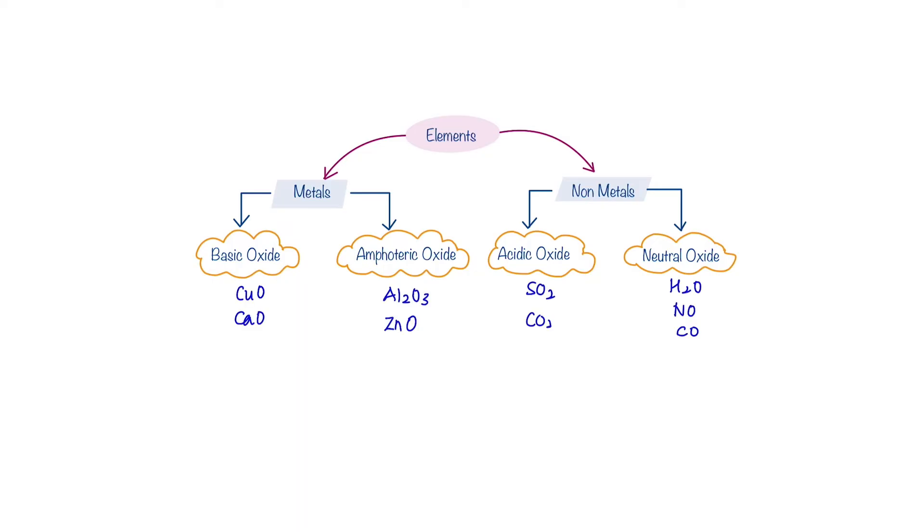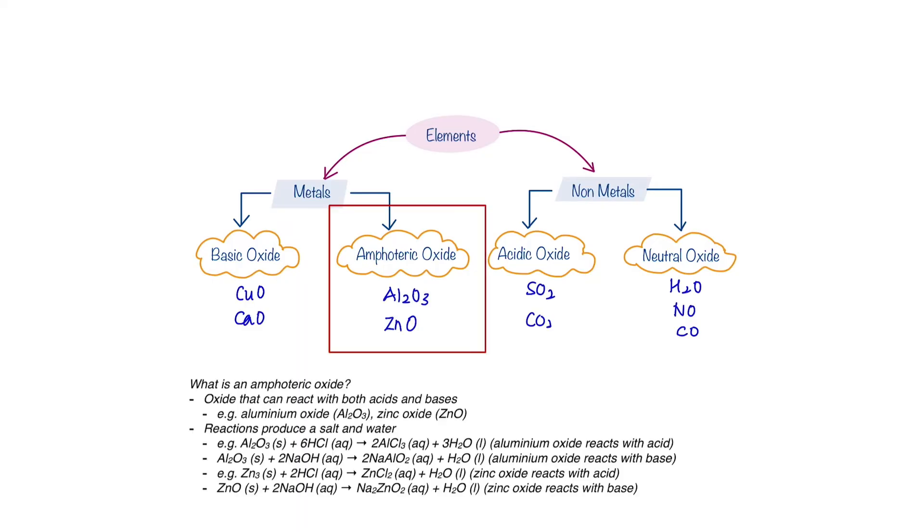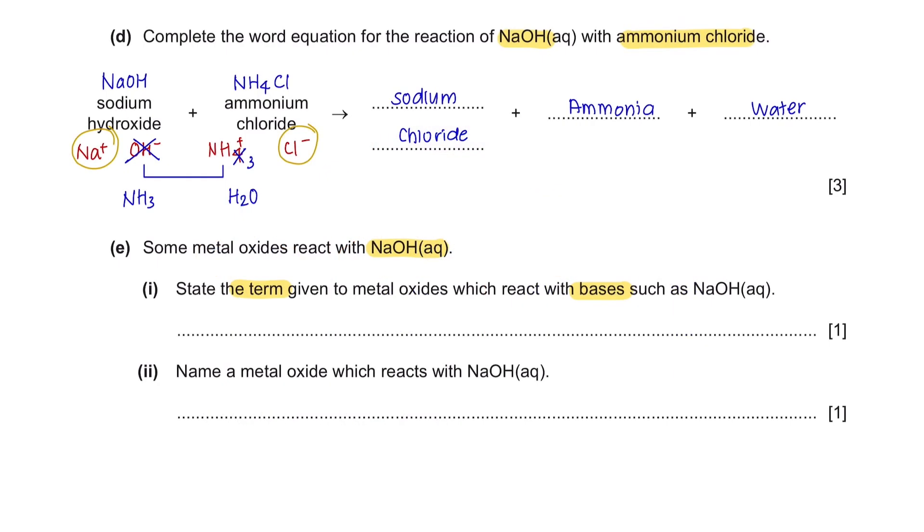These are some of the examples for each type of oxide. However, amphoteric oxide is the only oxide that can react with both acids and bases. As you can see, there are two examples of amphoteric oxide here that is reacting with sodium hydroxide. So the term given here would be amphoteric oxide.